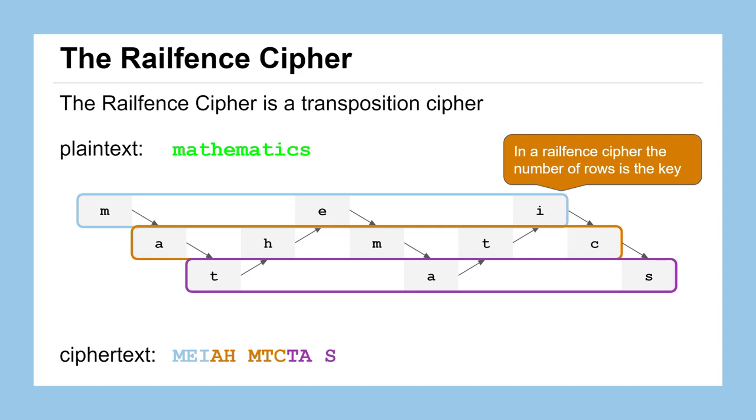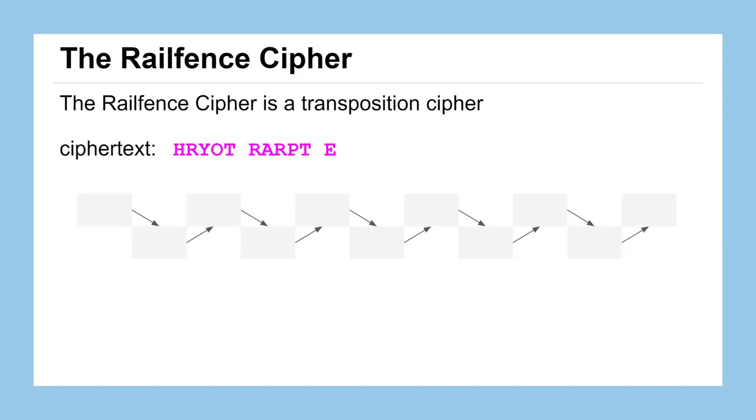Let's talk about how to decipher messages that you might receive that have been encrypted using the railfence cipher. Here's a ciphertext that we've received and we know it was using a two row railfence cipher, but the sender and the receiver of the message have to know the key in order for this process to work.